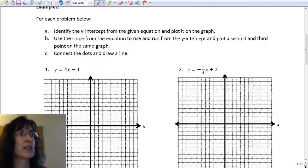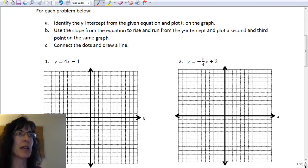For these problems, we want to first identify the y-intercept and plot it. Then we want to use the slope like we did in the plotting rise over run video and find two more points for our line. The third step is to connect the dots and make it into a line.